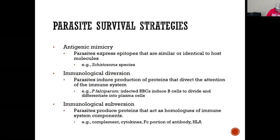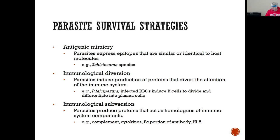Immunological diversion — the parasite induces production of proteins that divert the attention of the immune system. It's kind of like shedding — here, we're going to produce some proteins to try to throw you off. Plasmodium falciparum infects the red blood cell and induces B cells to divide and differentiate into plasma cells. The body is producing the proteins; the parasite is inducing that production.